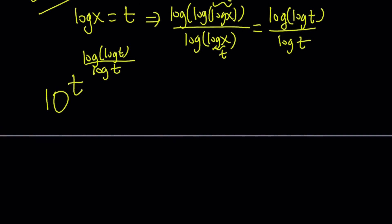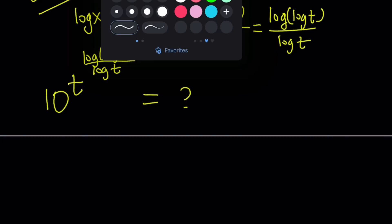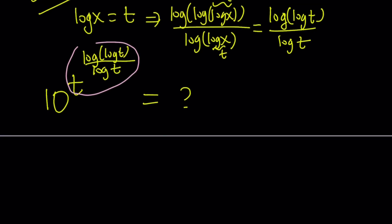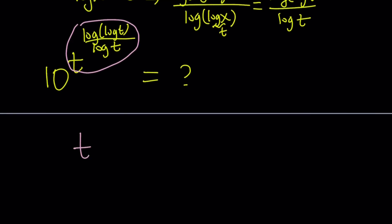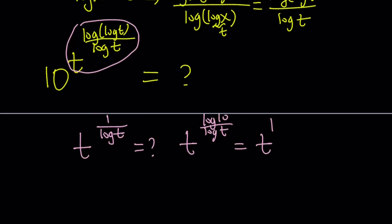We're going to simplify this expression in terms of t and then go back to x. Let's focus on the exponent again. Notice that we have log t in the denominator. What is t to the power 1 over log t? One way to look at it: write this as t to the power log 10 over log t, then rewrite it as t to the power log base t of 10. Since these two are the same, this just becomes 10.